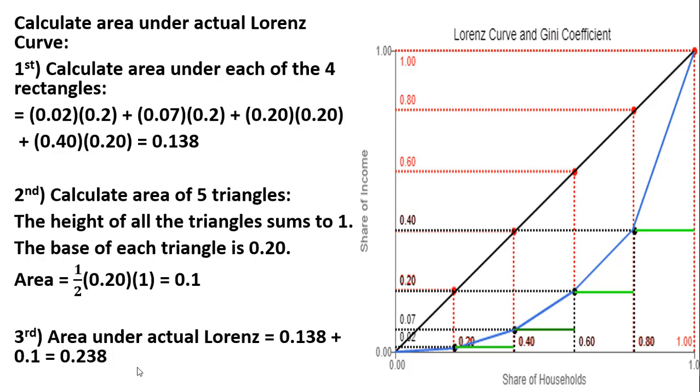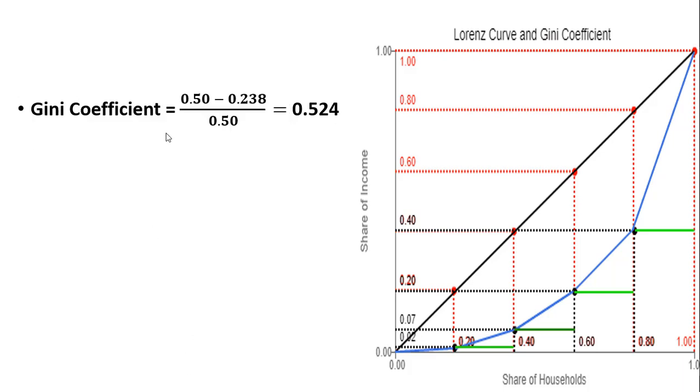Okay, so we've got all the information now to calculate the Gini coefficient. And so here is our calculation. Again, the Gini coefficient is going to be the ratio of the area between the perfect equality Lorenz curve and the actual Lorenz curve divided by the area under the perfect equality Lorenz curve.